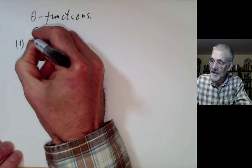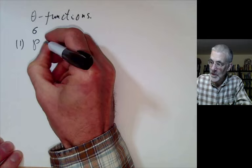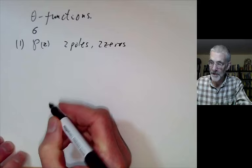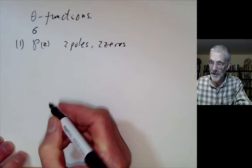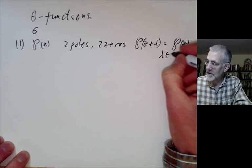First of all, let's recall the functions we had in previous lectures. We had the Weierstrass p function, which has a pole of order two and two zeros in a fundamental domain. And it's periodic, so p of z plus lambda equals p of z, where lambda is in our lattice Lambda, which is a subset of the complex numbers.